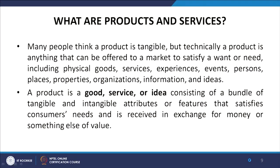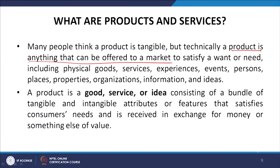Now let us look at what products and services are. Many people think a product is tangible, but technically a product is anything that can be offered to a market to satisfy a want or need — including physical goods, services, experiences, events, persons, places, properties, organizations, information, and ideas. A product is a good, service, or idea consisting of a bundle of tangible and intangible attributes or features.